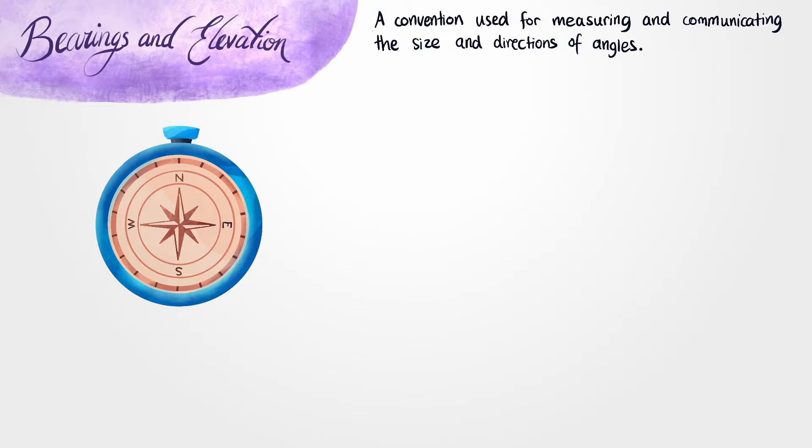Now between the cardinal directions we also have halfway points as well. So North-East is the point halfway between North and East. And we also have North-West, South-West and South-East. Every working analog compass like this will always have a needle. Now a compass needle is actually a really tiny magnet and it always points towards the Earth's North Pole.